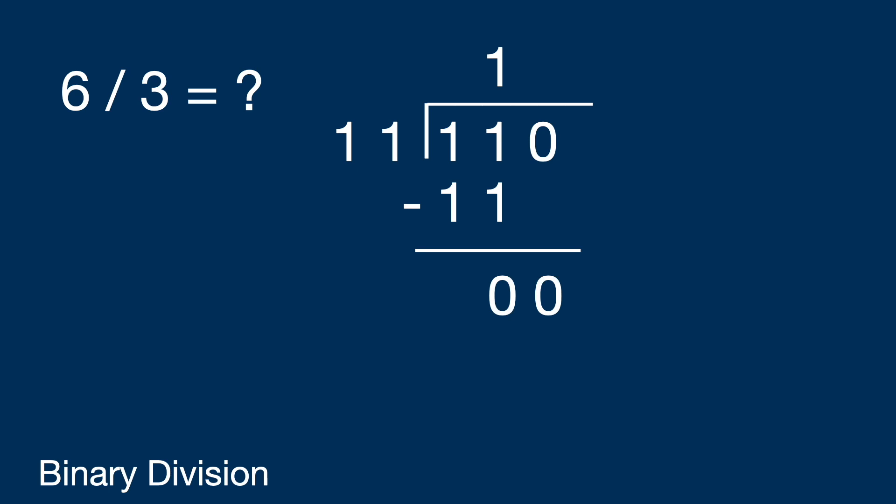The next digit, zero, is dropped down. Since zero divided by one-one is meaningless and there are no further bits, we get quotient one-zero with remainder zero. In decimal, this is two, exactly the result of six over three.